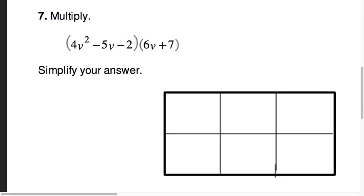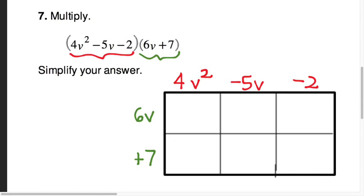It takes each of these factors, 4v² - 5v - 2, and it writes it as either the header of a row or the header of a column in this lattice. So I'll write the terms 4v² - 5v - 2 across the top of the headers of this lattice. And then I'll write 6v plus 7 as the headers of the rows running down the left side of the lattice.